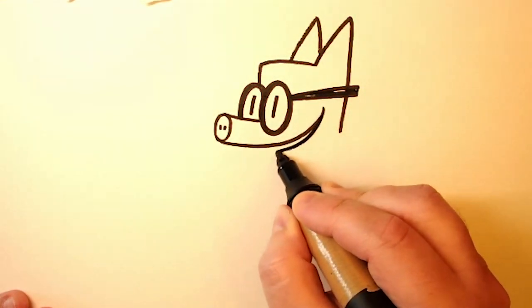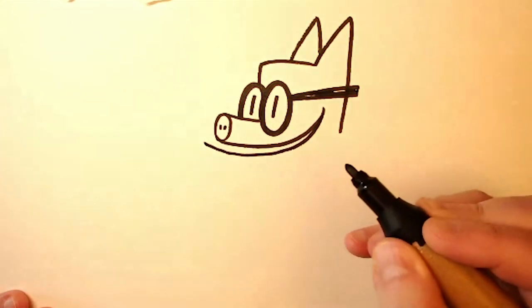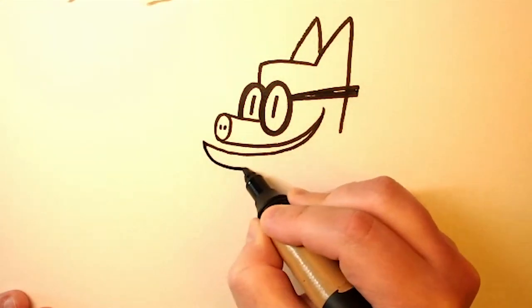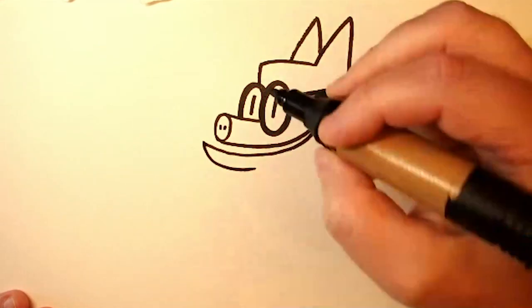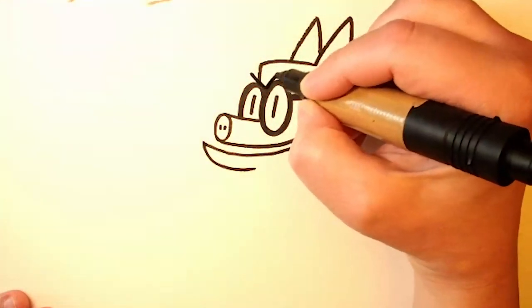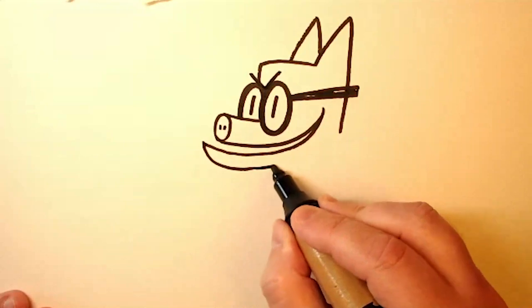And the bottom of Piggy's mouth comes out a little bit further than his nose. So his chin protrudes. And we'll put a V between his eyes so that everybody knows how angry he is.